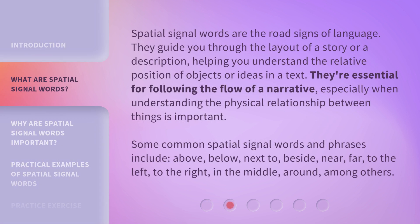Spatial signal words are the road signs of language. They guide you through the layout of a story or a description, helping you understand the relative position of objects or ideas in a text. They're essential for following the flow of a narrative, especially when understanding the physical relationship between things is important.